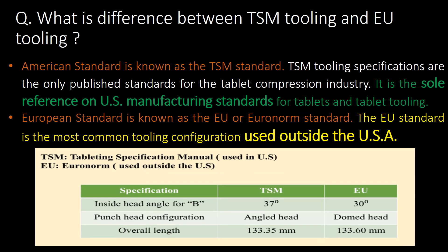What is the difference between TSM tooling and EU tooling? The American standard is also known as TSM standard. It is the sole reference on US manufacturing standards for tablets and tablet tooling. Whereas the European standard is also known as EU or Euronorm standard. The EU standard is the most common tooling configuration used outside the USA.